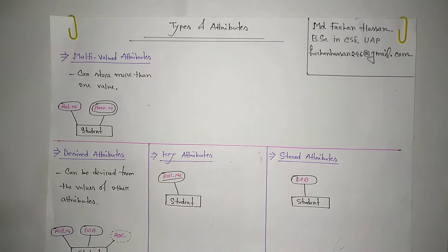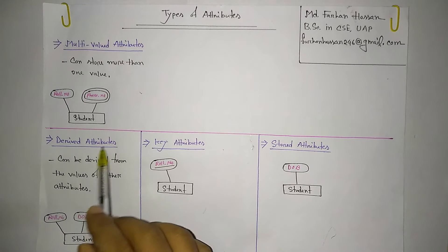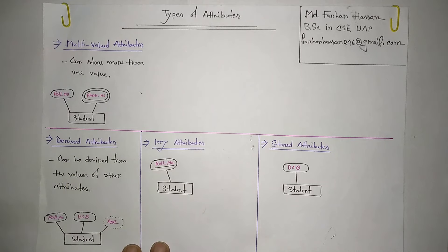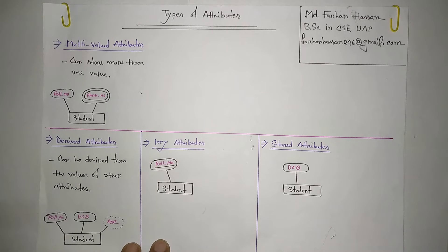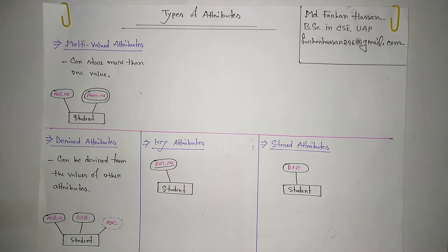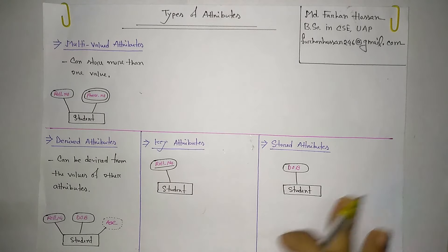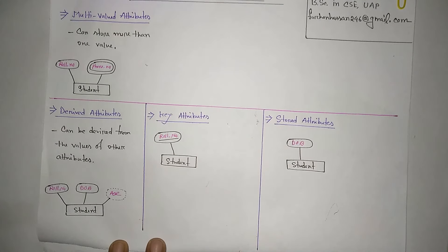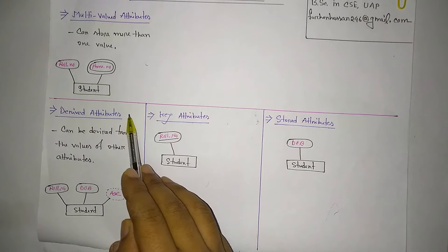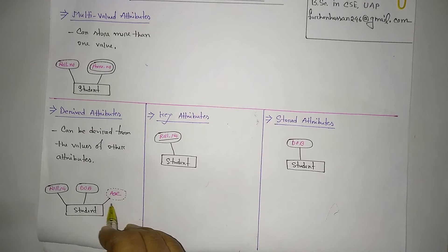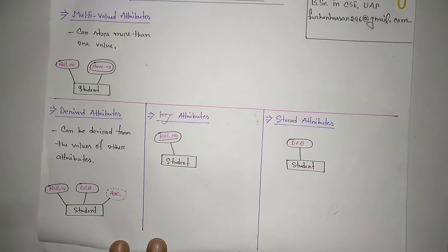Derived attributes are attributes whose values can be derived from other attributes. In an ER diagram, derived attributes are represented with a dashed ellipse. For example, in a student entity, age is a derived attribute — it can be derived from the date of birth.